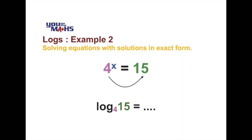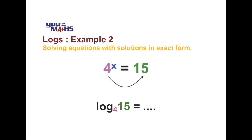That means 4 goes to the base, and if we follow the loop around we have log base 4 of 15, and that will equal x, the unknown power. So there's a solution in exact form with base 4.